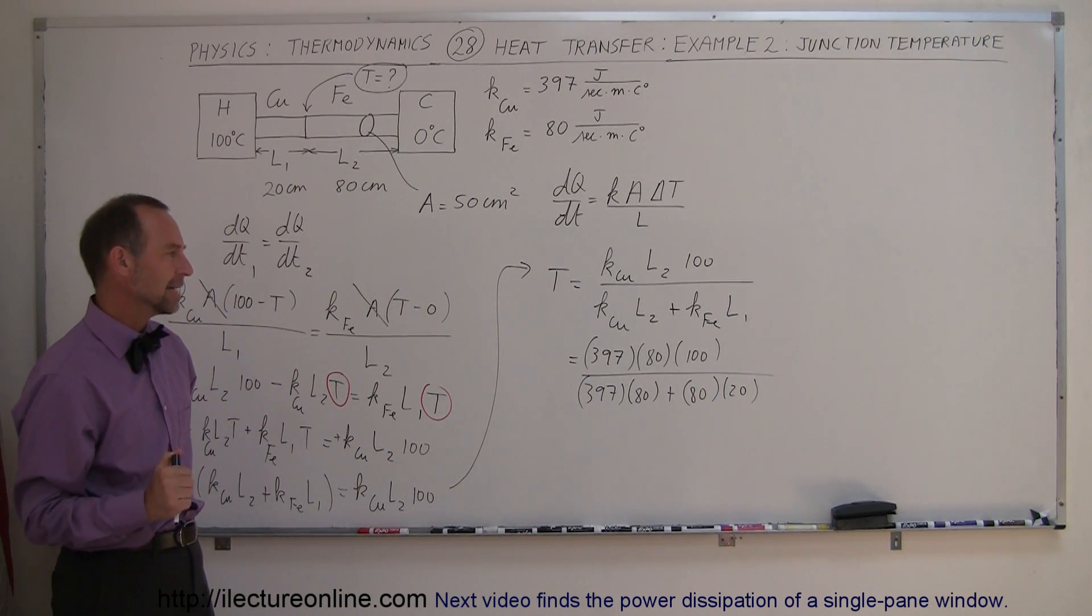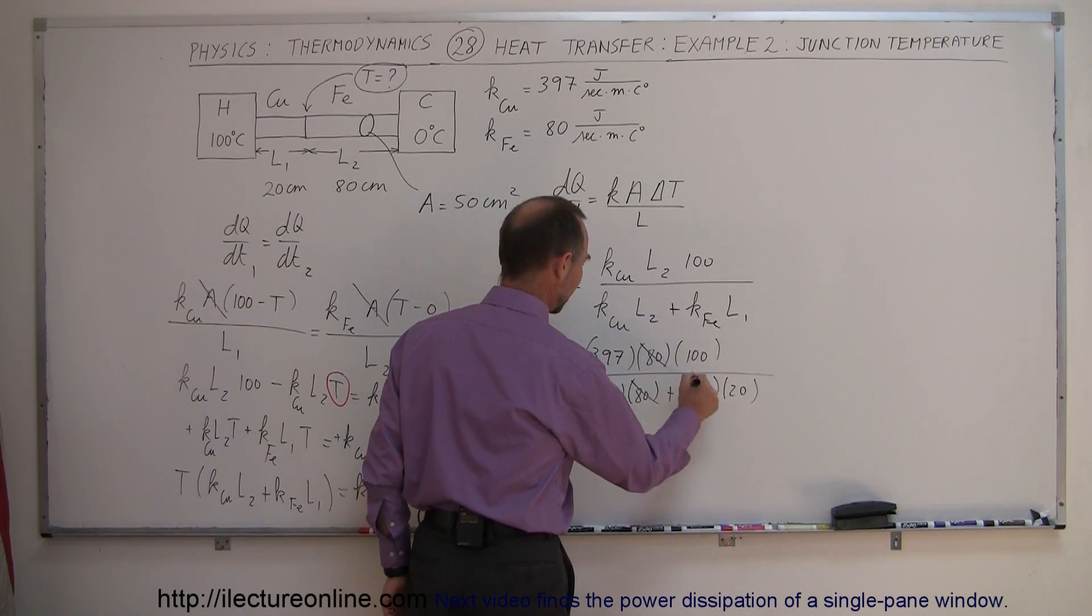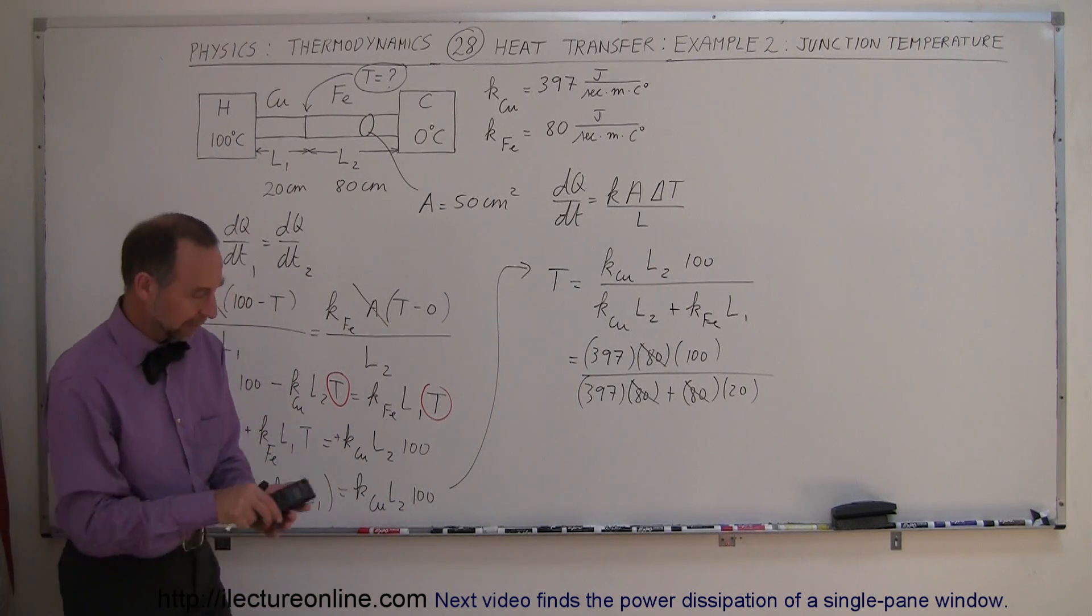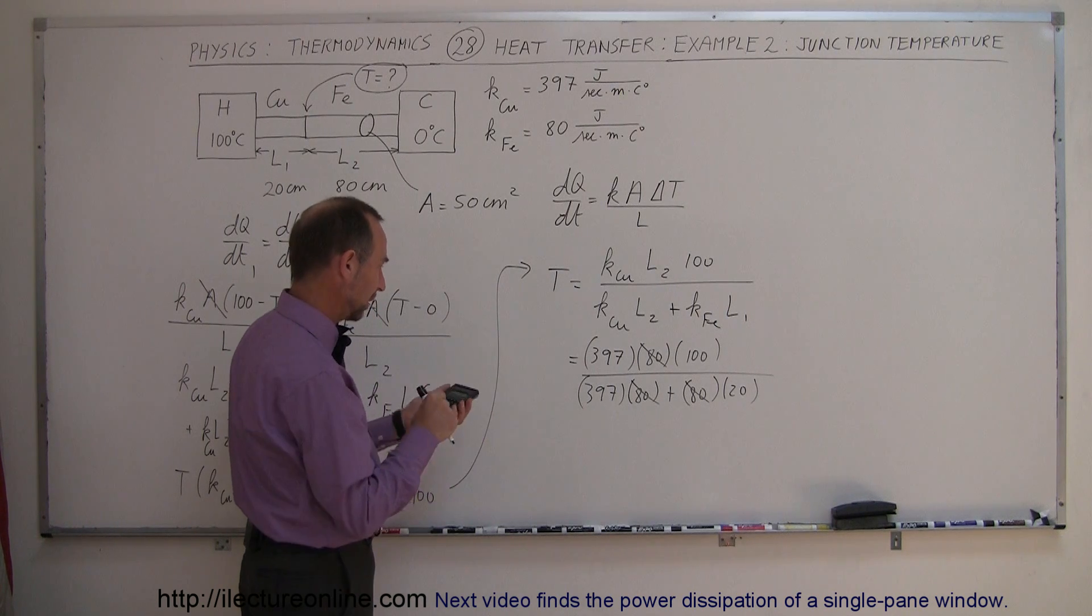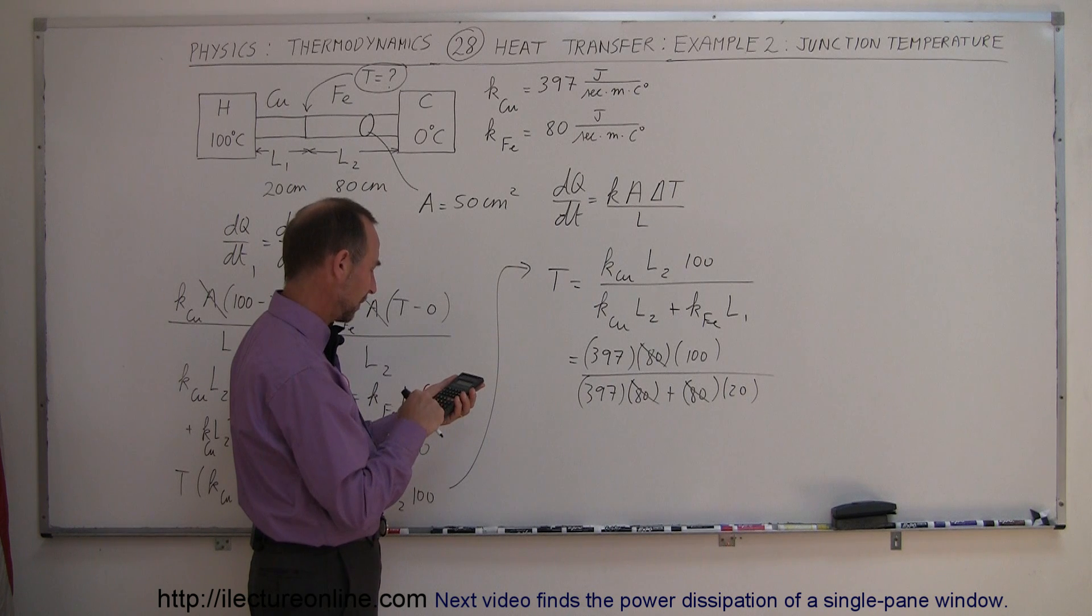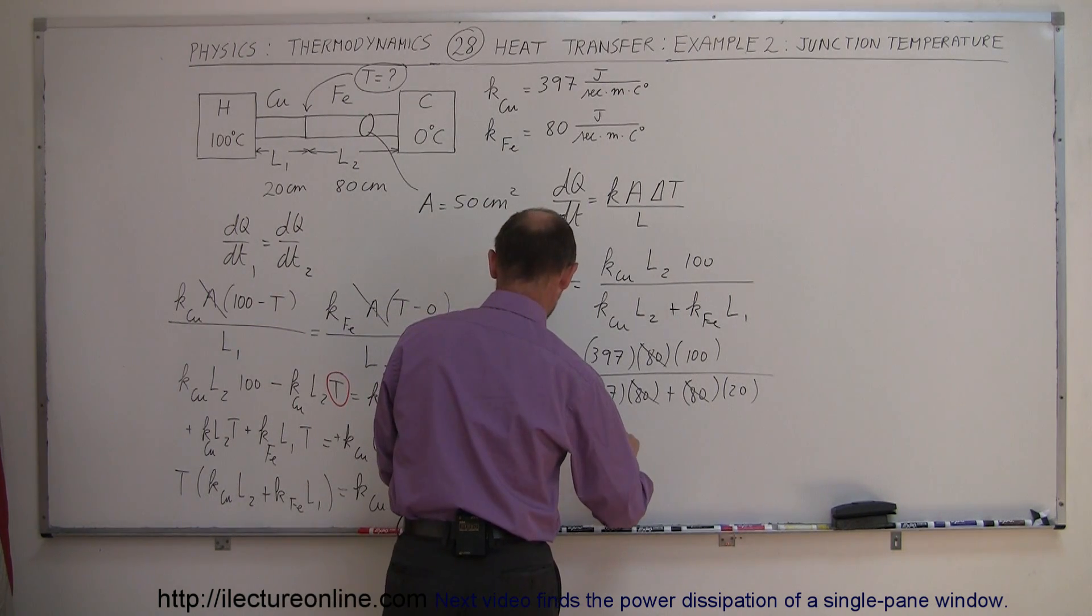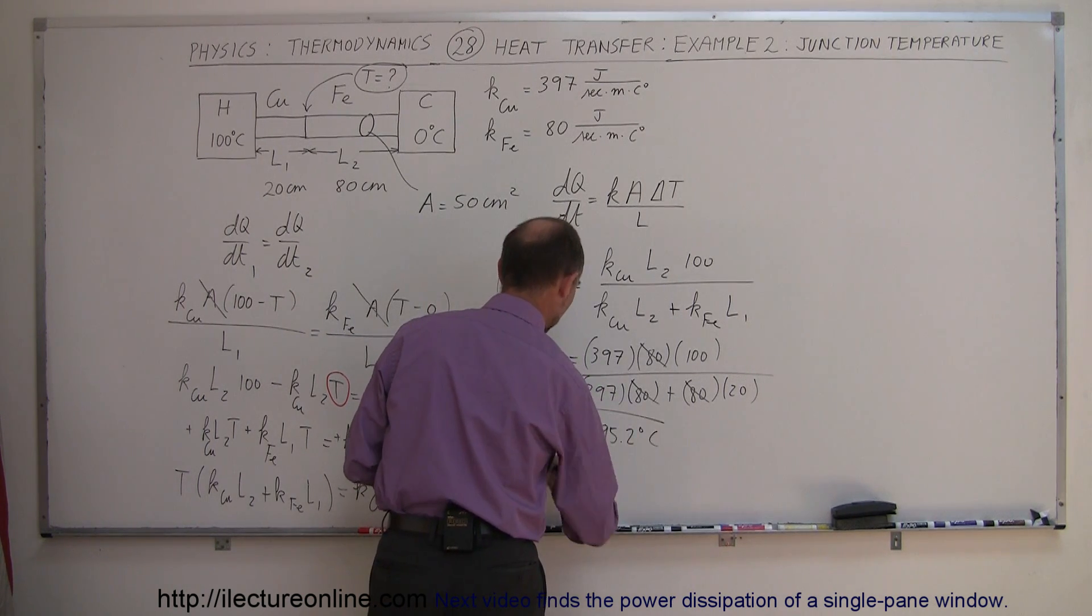Now, it looks like I have 80s. I have an 80 here, an 80 there, an 80 there, so I can simplify at least by canceling that out. Makes it a little bit easier. And with my calculator, what do we get? It looks like I have 397 plus 20, that is 417 in the denominator, so it's 397 times 100 divided by 417. And that gives me a temperature of 95.2 degrees centigrade, and there's my junction temperature. Between zero and 100, so I'm very confident that that is probably correct.